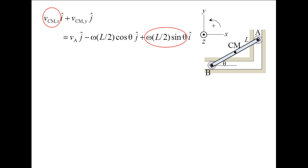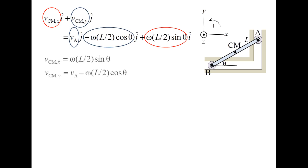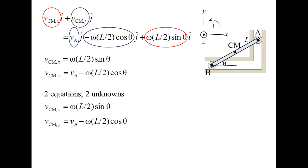Plug in the expressions for the velocities and evaluate the cross product. Equating the x terms and the y terms, we obtain two equations. We now have two equations and two unknowns and can calculate the components of the center of mass velocity. The center of mass is moving to the left and downward.